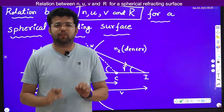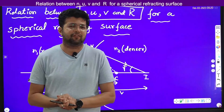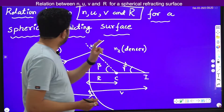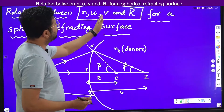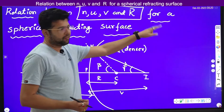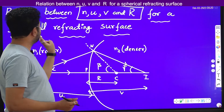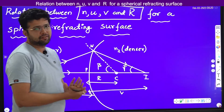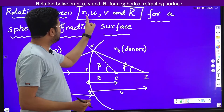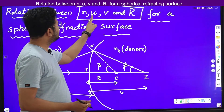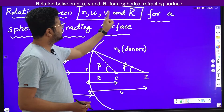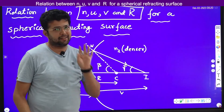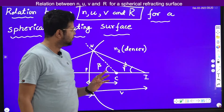Hello dear students. Now we are going to derive the relation between n, u, v and r for a spherical refracting surface. Here n means refractive index, u means object distance, v means image distance and r means radius of curvature.